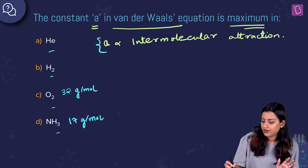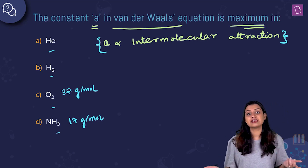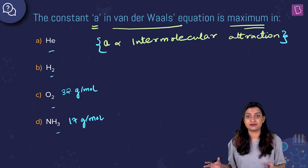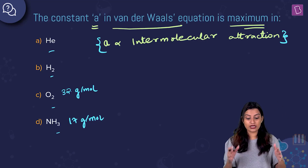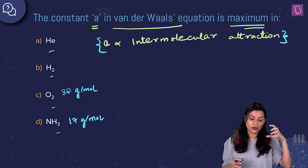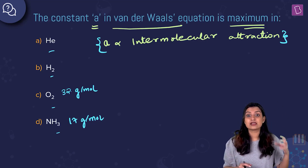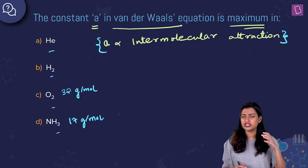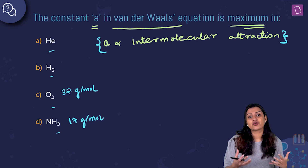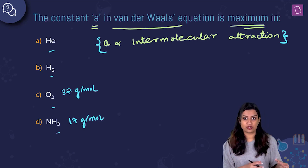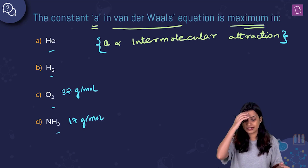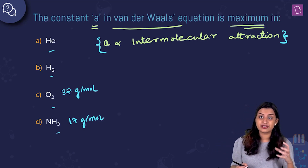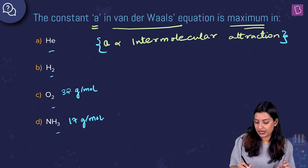Based on molar mass alone, you might say oxygen has the maximum 'a' value, but that would be forgetting that ammonia has intermolecular hydrogen bonding, which is a much stronger force of attraction than van der Waals forces.